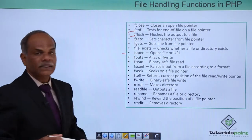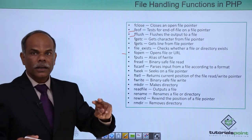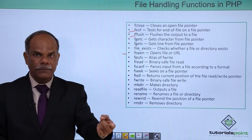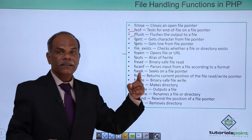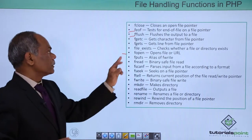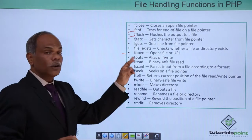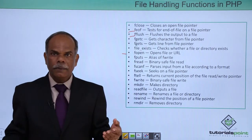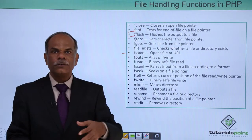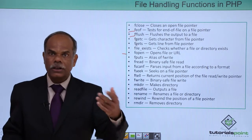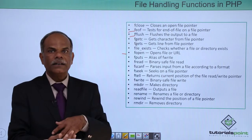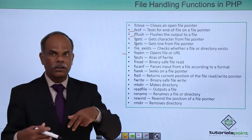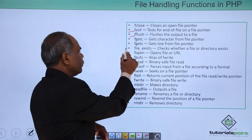Normally when you close the file, the data that may be present in the buffer before actually storing into the file, that buffer is cleared when you close the file. But before closing the file, if you want to explicitly clear the buffer, the fflush function is there, which flushes the output to a file. fgetc and fgets are the two input functions — fgetc reads one character from a file, and fgets reads a string from a file. There is a boolean function called file_exists; if you try to open a file and it is not present, it will throw an error, so a good practice is to verify whether the file exists.